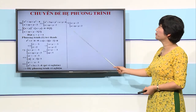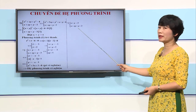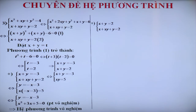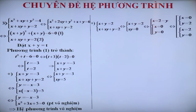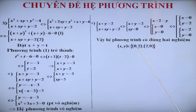Xét trường hợp thứ nhất: x cộng y = âm 3, kết hợp với phương trình thứ 2 (x cộng xy cộng y = 2), thế x cộng y = âm 3 vào, ta thu được x nhân y = 5. Rút y theo x và thế vào phương trình thứ 2, phương trình này vô nghiệm, do đó hệ vô nghiệm. Ở trường hợp thứ 2: x cộng y = 2, kết hợp với phương trình thứ 2, chúng ta làm hoàn toàn tương tự và thu được các nghiệm (x; y) = (0; 2) và (x; y) = (2; 0). Kết luận: hệ phương trình có đúng 2 nghiệm (x; y) là (0; 2) và (2; 0).